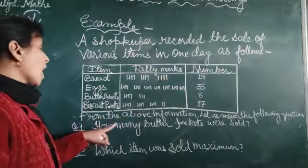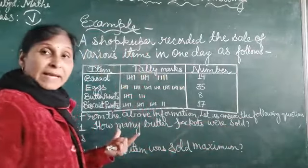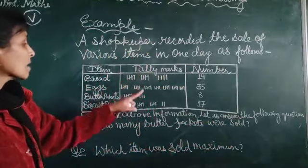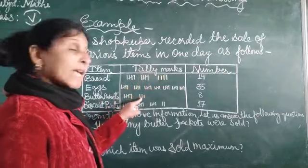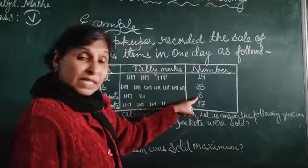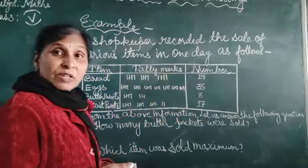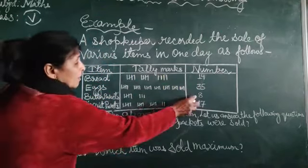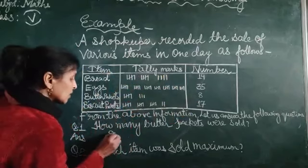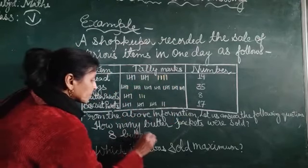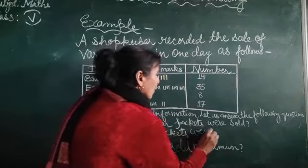let us answer the following question. Is information ko dekhkar, jo hamein questions given hai, uska answer hamein deni. The first question is, how many butter packets were sold? Means, yeh butter packets, kitna sold kiye gaye hai, ab hum kahan se kitna dekhe hai. Yeh hamara item, that is butter packets likha hua hai. Iske aage hamara item, tally marks wane, aur number, is number given and it is eight. Toh, how many butter packets were sold? That is the eight. Here, the number is given and we give this tally marks also, that is five, six, seven, eight. Means, eight butter packets were sold.